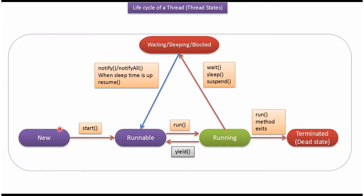A thread can go from new state to runnable state, from runnable state to running state, from running state to runnable state, from running state to waiting, sleeping, or blocked state, from waiting, sleeping, or blocked state back to runnable state, and from running state to terminated state. This is the life cycle of a thread.